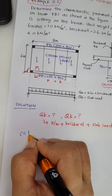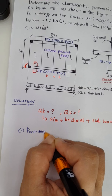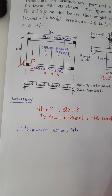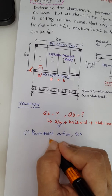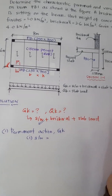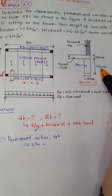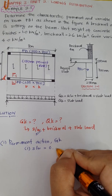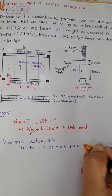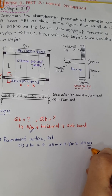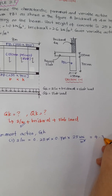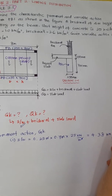Let us calculate the permanent action GK. First, calculate the self-weight of the beam. The beam is 250 mm (0.25 m) by 700 mm (0.7 m), multiplied by the unit weight of concrete, 25 kilonewton per meter cube. The answer is 4.38 kilonewton per meter.